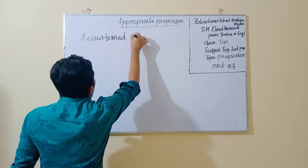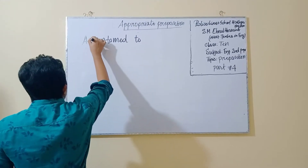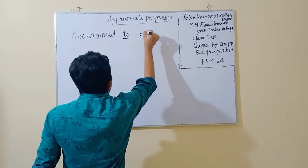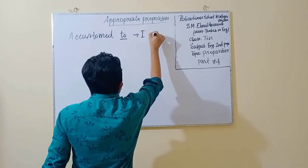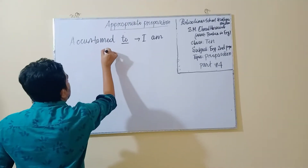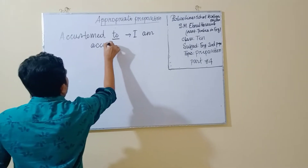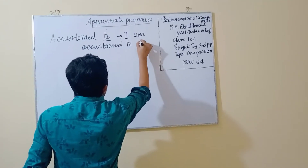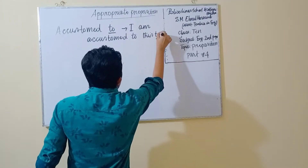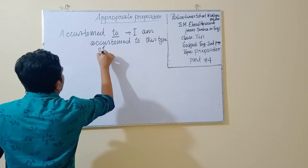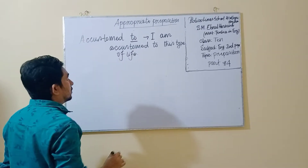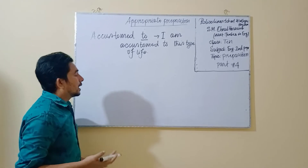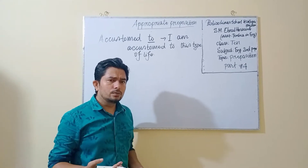The word 'accustomed' is followed by the preposition 'to'. For example: I am accustomed to this type of life. Accustomed to means to be habituated.